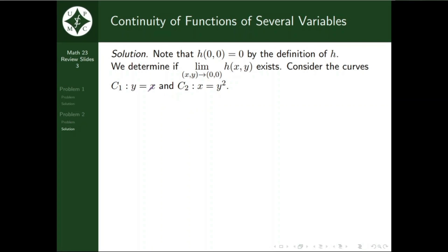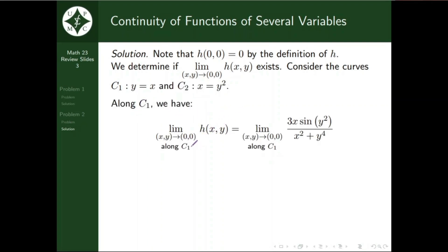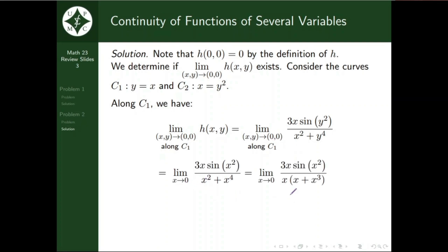Recall na kapag same lang yung limit along C1 and C2, it is not enough to show na nag-exist yung limit — baka may ibang curve pa na hindi same yung limit. So let's try using y = x and x = y². Along C1, yung gagamitin nating expression ay yung condition where (x,y) ≠ (0,0). Kailangan substitute lang natin yung y with x — lahat ng y dito magiging x — and then we let x approach 0.